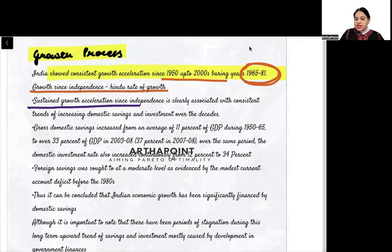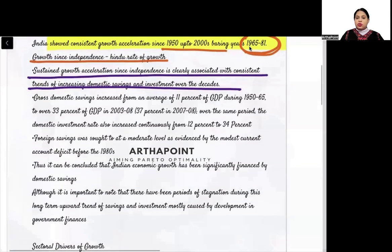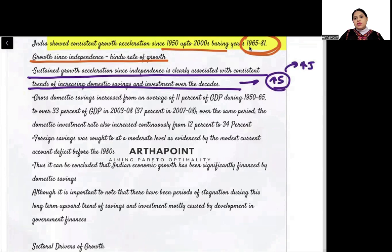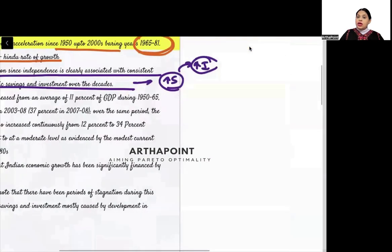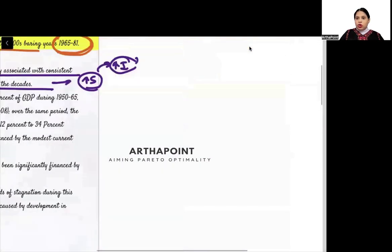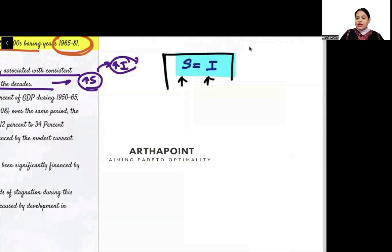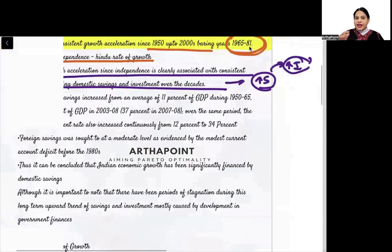Sustained growth acceleration since independence is clearly associated with a consistent trend of increasing domestic saving and investment over the decade. As savings have increased over time, investment automatically increases. In a two-sector circular economy, savings and investment are equal to each other — whenever savings increase, investment automatically increases. These two are hand-in-hand.